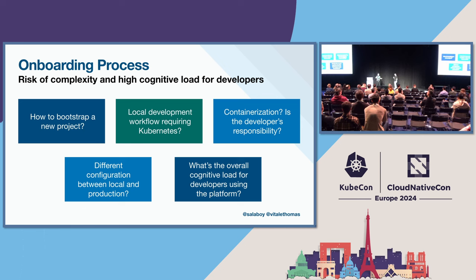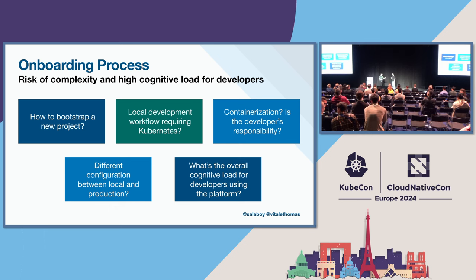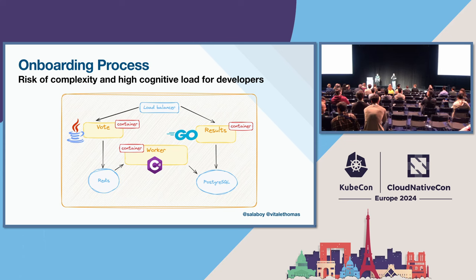We all went through that Kubernetes learning curve where we eventually understand how it works and then can use it. But think about new people coming fresh out of college — all the stuff they need to learn is kind of insane. So thinking about how to reduce that is quite important. We're really talking about a very simple application here: just three simple applications in a distributed system. How much work will be required by developers to run this locally?